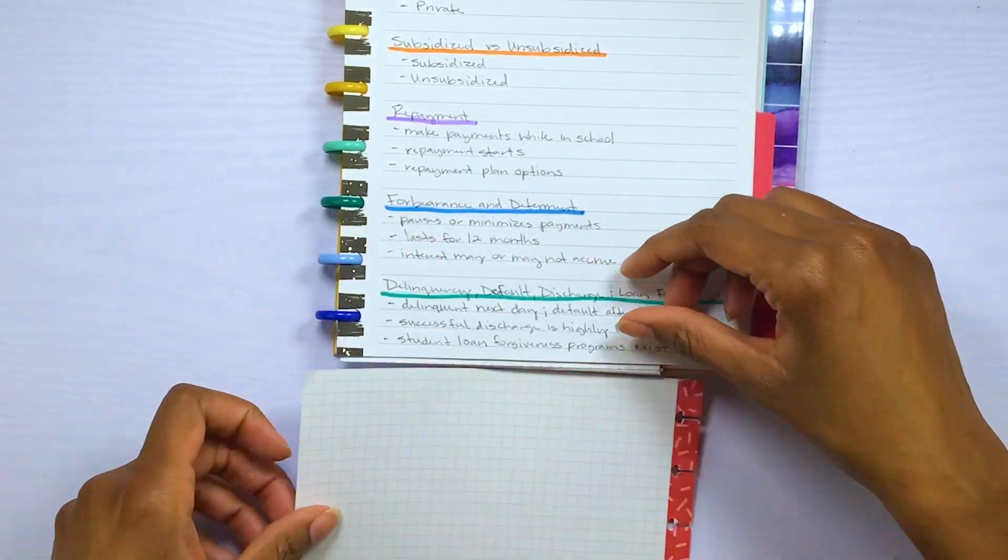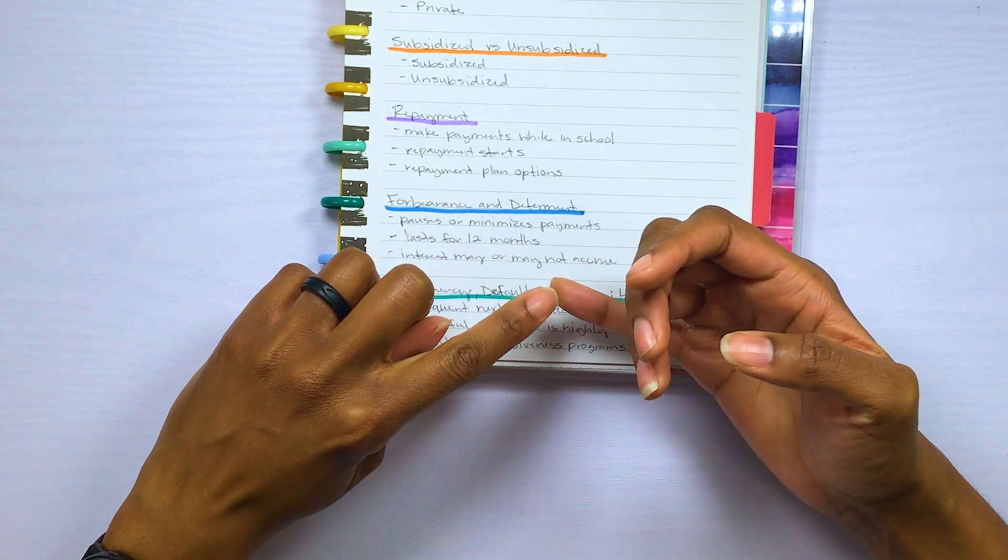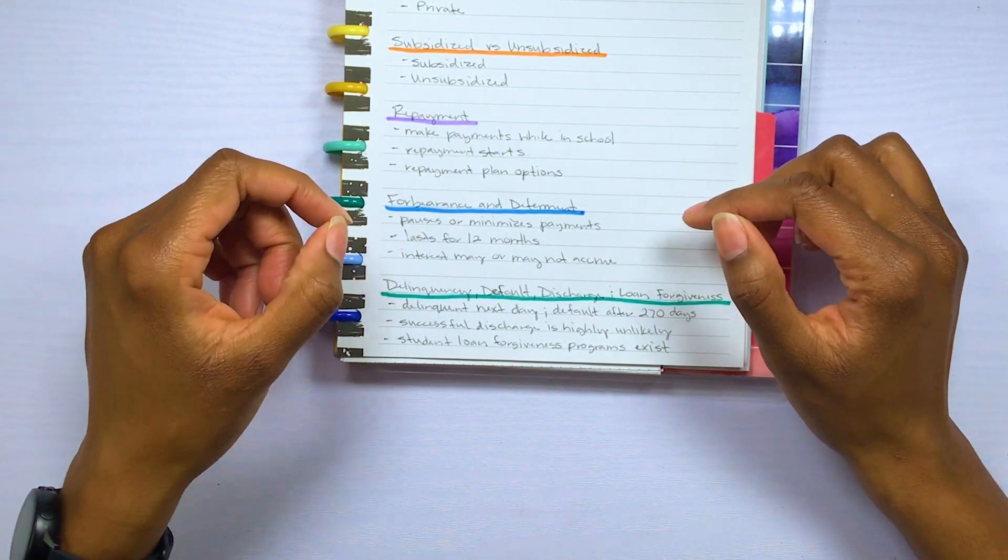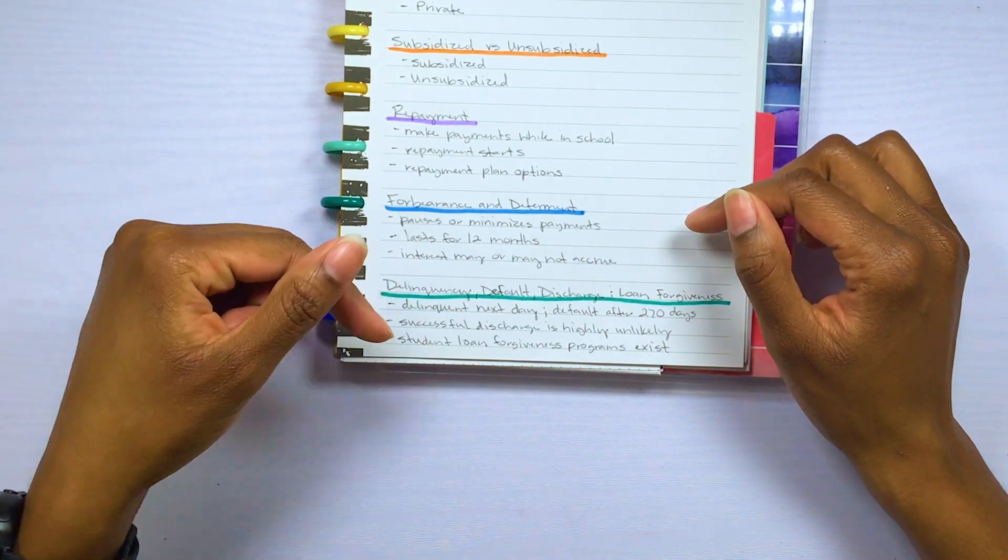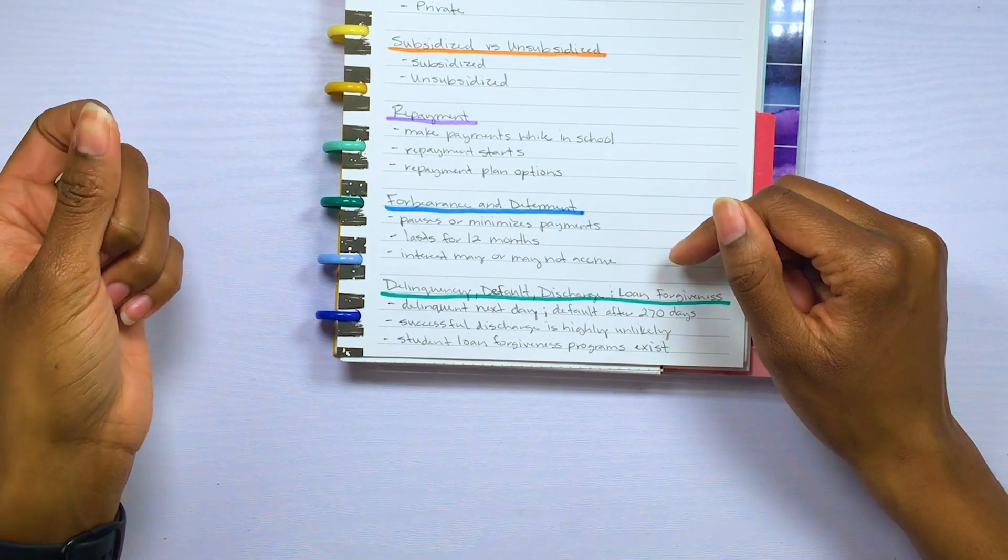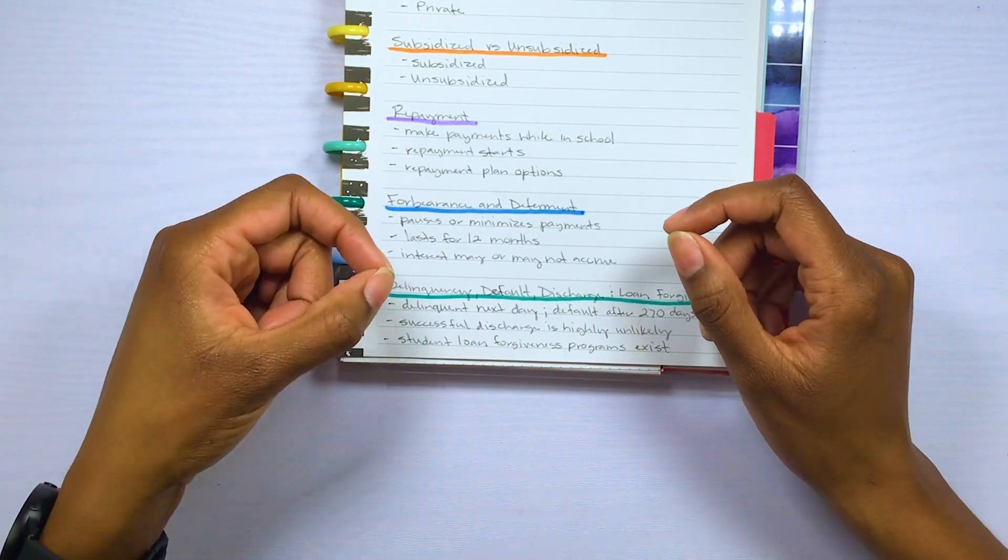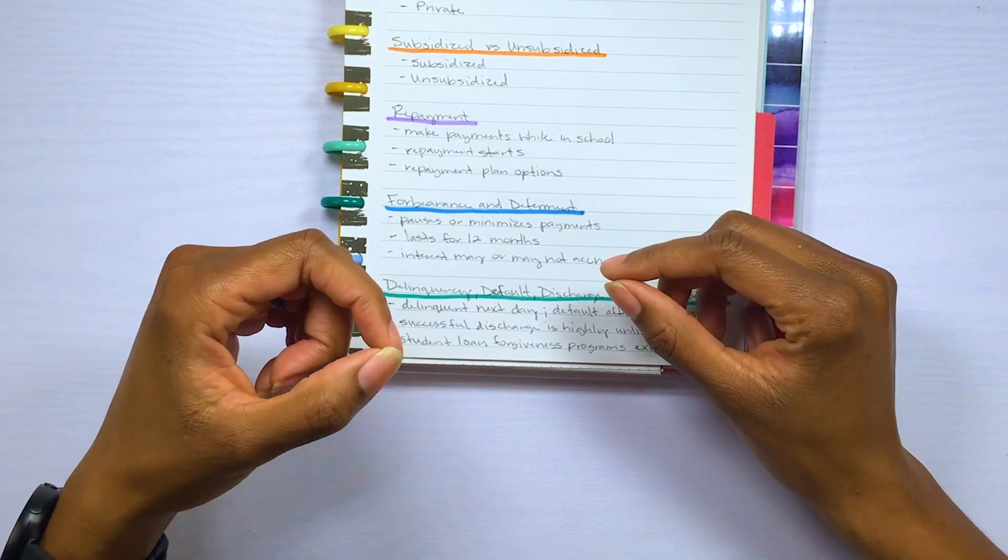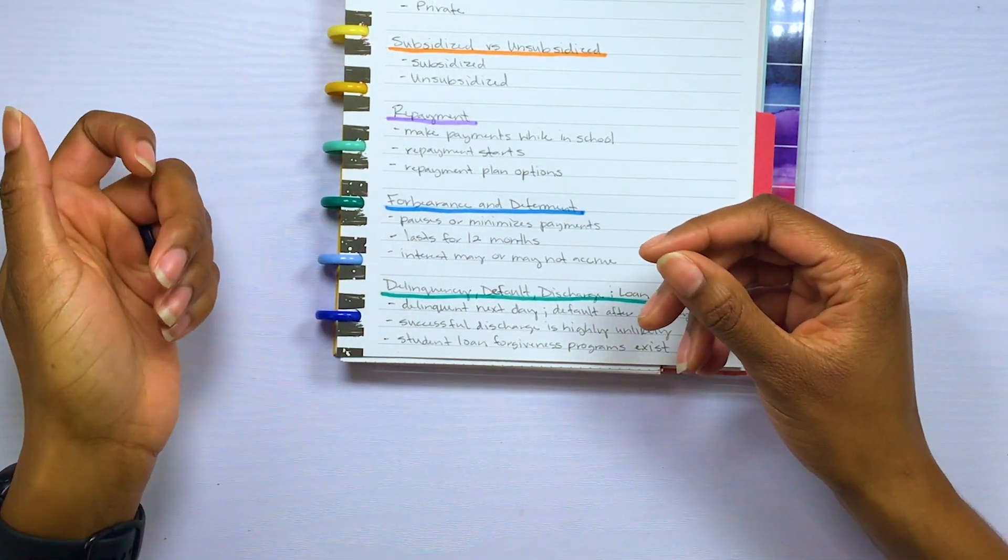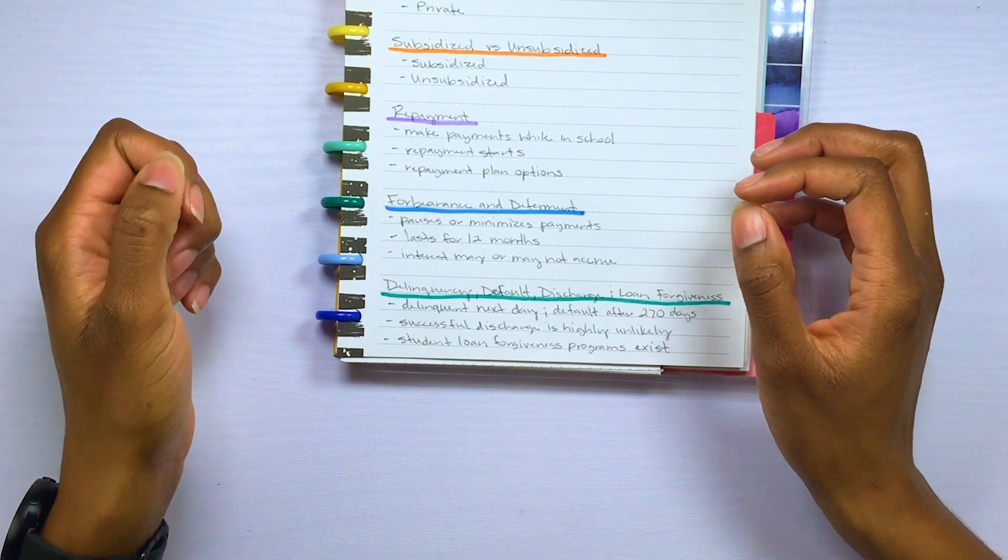So lastly, I wanted to talk about delinquency, defaults, discharges, and loan forgiveness when it comes to federal student loans. So know that if you don't pay off your loan and you just stop making payments, then your loan will be delinquent the first day after your missed payment. So after 90 days, your delinquent status will be sent to the credit bureaus. Your loans will default after 270 days or nine months past due. Defaulting on your student loans can damage your credit. It may result in wage garnishment, and any tax refund that you may get can be withheld. So federal student loans can be discharged in a chapter 7 or 13 bankruptcy, but it is near impossible to get them discharged successfully. So take heed.